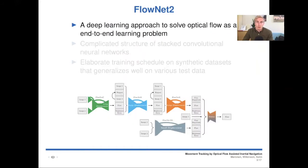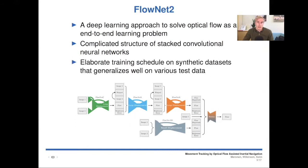We use FlowNet2 to calculate our optical flow. This is a deep learning approach to solve optical flow as an end-to-end learning problem. It's a complicated structure of stacked convolutional neural networks, and it requires elaborate training schedule on synthetic datasets to be trained properly. But after that, it generalizes very well on various test data and also all kinds of real video data.